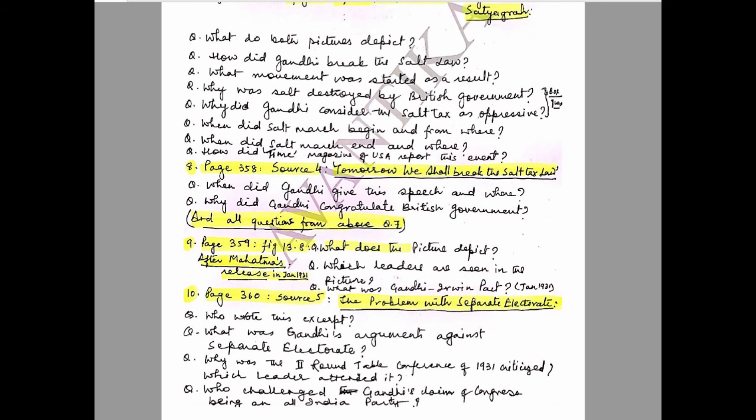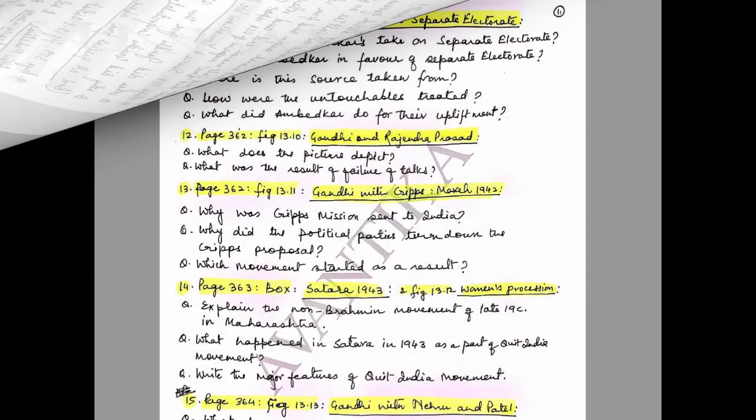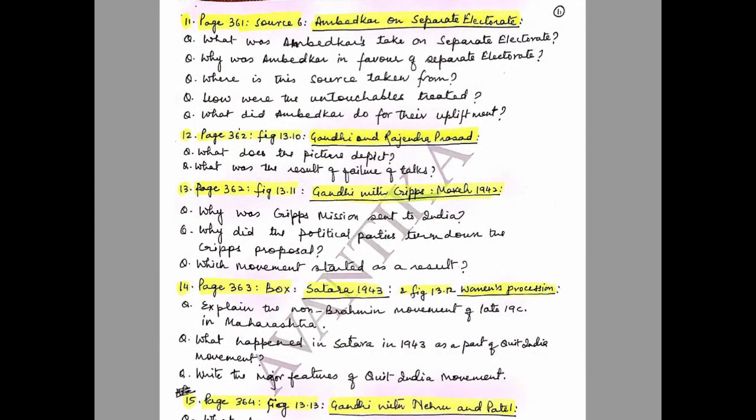Question 10: Page 360, Source 5 — 'The Problem with Separate Electorate.' Questions: Who wrote this excerpt? What was Gandhi's argument against separate electorate? Why was the second Roundtable Conference of 1931 criticized and which leader attended it? Who challenged Gandhi's claim of Congress being an all-India party?